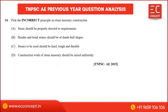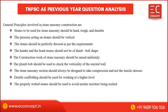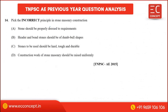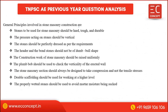Next question: identify the incorrect principle in stone masonry construction. The general principles involved in stone masonry construction include: stones used should be hard, tough, and durable; the pressure acting on stone should be vertical; and stones should be perfectly dressed as per the requirement.